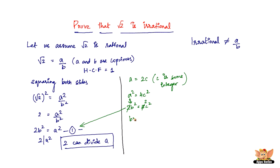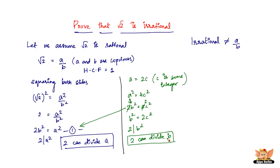Dividing both sides by 2, we get b² = 2c². From this equation, we can say that 2 divides b². If 2 divides b², then 2 can also divide b. So we've established that 2 can divide both a and b. That means a and b are not co-primes, which contradicts our earlier assumption that a and b are co-primes.